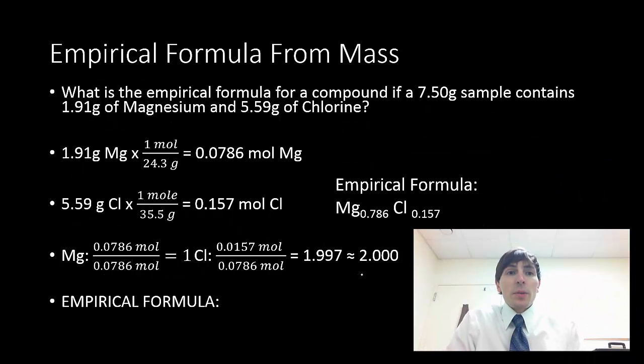Okay, so the first thing we need to do is we need to look at the problem, and we need to identify and list what we have available. So I'm looking at this problem, and it says, what is the empirical formula for a compound if a 7.5 gram sample contains 1.91 grams of magnesium and 5.59 grams of chlorine? So I look at my two elements, and I start a list with my known quantities.